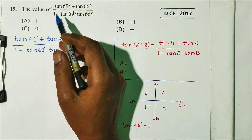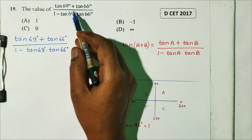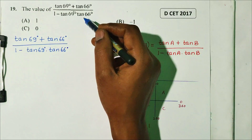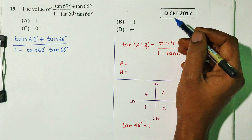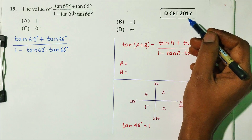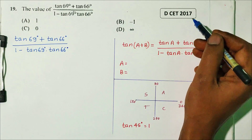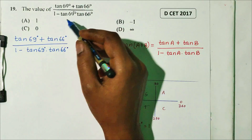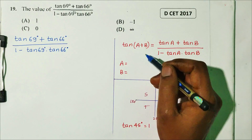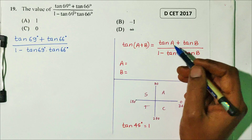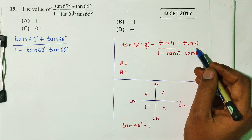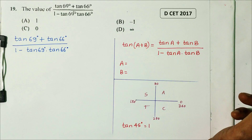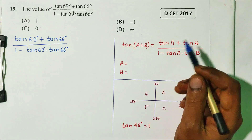Question number 19. The value of (tan69° + tan66°)/(1 − tan69°·tan66°). This question is DCT 2017. Observe the formula: tanA + tanB / (1 − tanA·tanB), which equals tan(A+B).